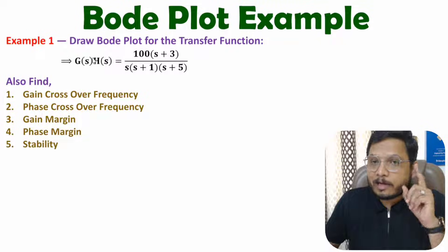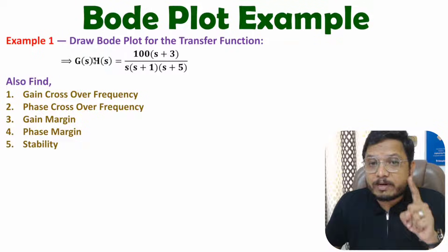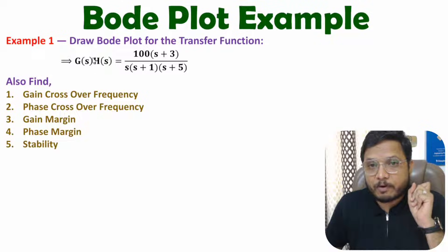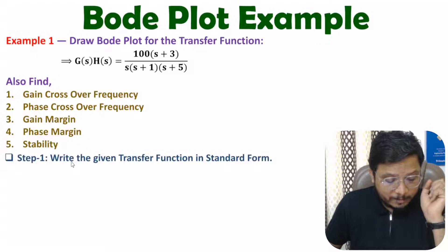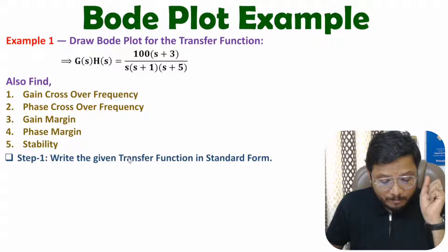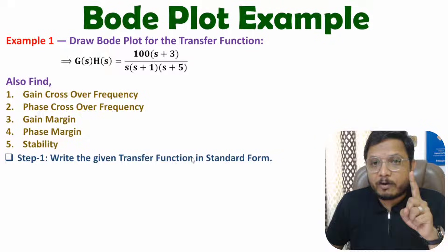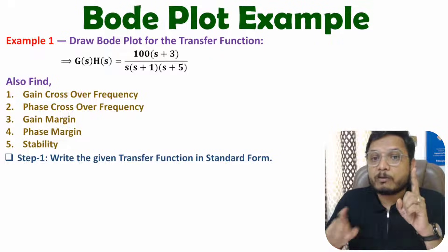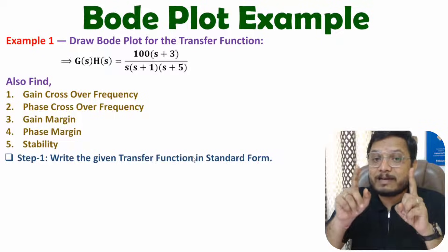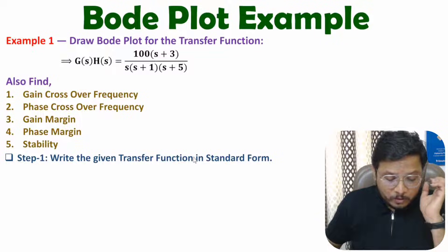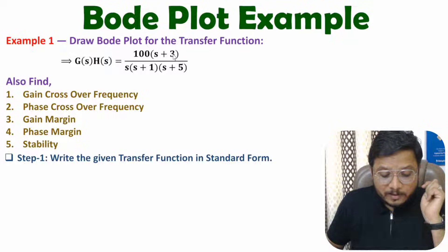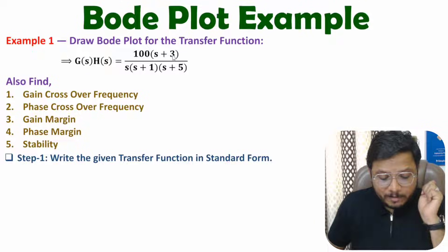In the first step we need to represent the given transfer function in standard form. In standard form we need to represent all the poles and zeros in the form of (1 + s/something). Here you can observe in the zero we have s + 3, so if you take 3 common then we will have (1 + s/3). In the denominator we have s, (1 + s), and s + 5.